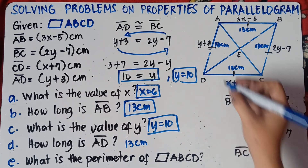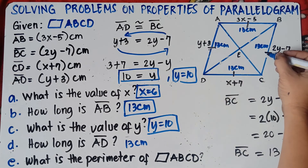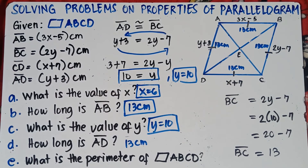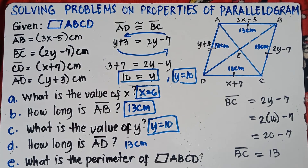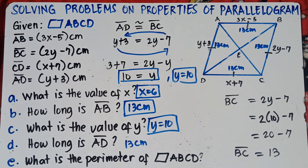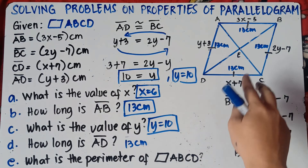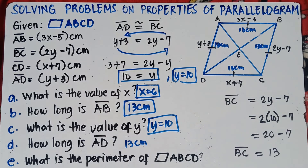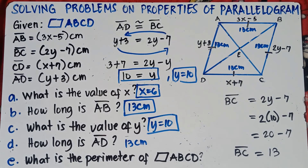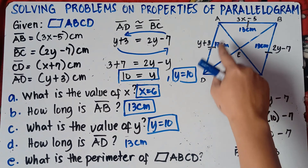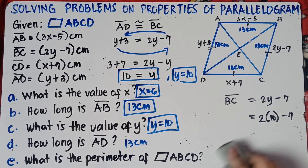Therefore, this figure is a rhombus — 4 equal sides. Remember class, a rhombus is a special type of parallelogram because it has 2 pairs of parallel sides.